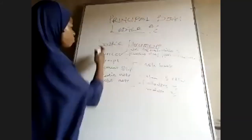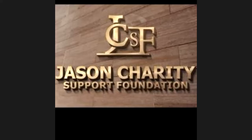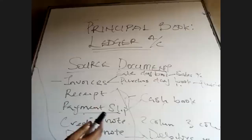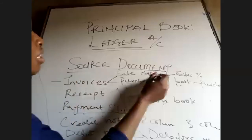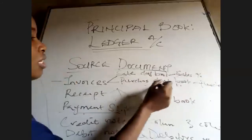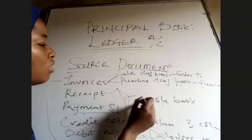Your source documents are there for population purposes, just like when I was explaining the introduction to accounting. You need your documents to put together to bring about the accounts. Your sales day book will be closed to your sales account, and your purchases day book will be closed to your purchases account. Receipts and payment slips work hand in hand with your cash book.